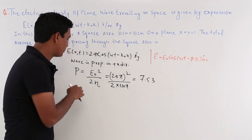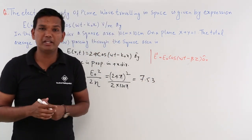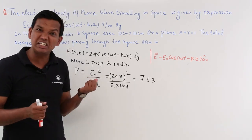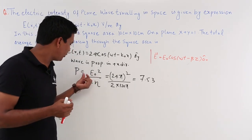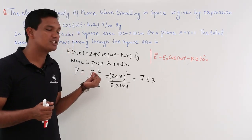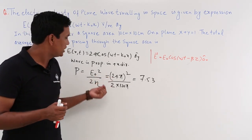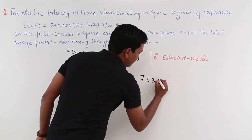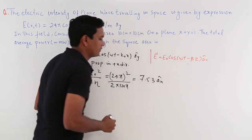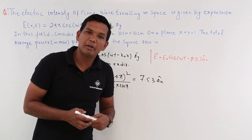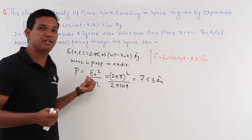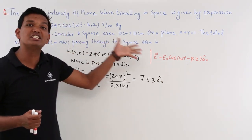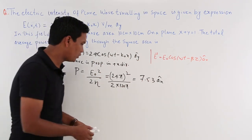The Poynting vector has a direction — it always points in the direction of propagation, since the Poynting vector is E × H. We are propagating along the x direction, so this will be 7.53 x̂ W/m². But our purpose is not just to find the Poynting vector; we need to find the average power crossing the square.